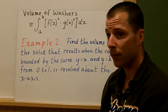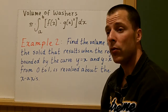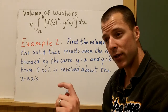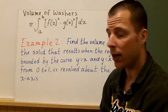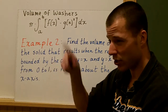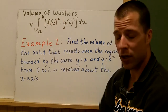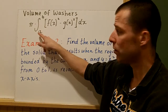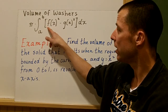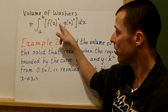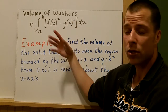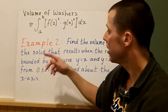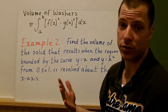When we talk about washers — think of a washer with a hole in it used with a screw — the idea is we draw that hole in our figure. The volume of a washer between two curves is pi times the integral from a to b of f(x) squared minus g(x) squared dx. You find the top and bottom functions, square both, and take the difference.